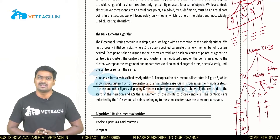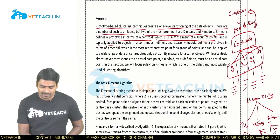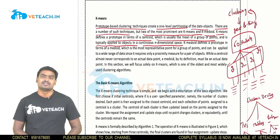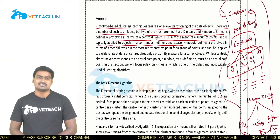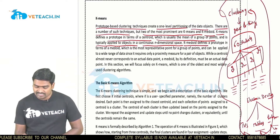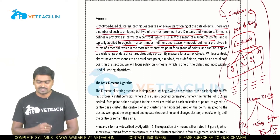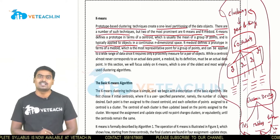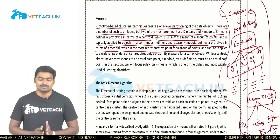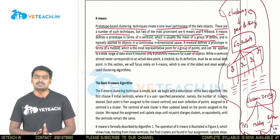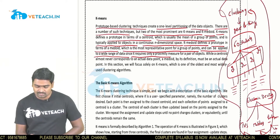In K-Means, the centroid is usually the mean of a group of points and is typically applied to objects in a continuous n-dimensional space. K-Medoid defines a prototype in terms of a medoid, which is the most representative point for a group of points. For example, electronic devices is the most representative point — it is the path from which we start and travel to other nodes.